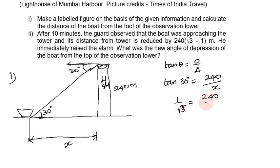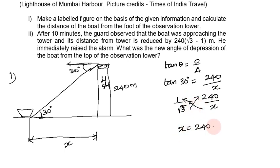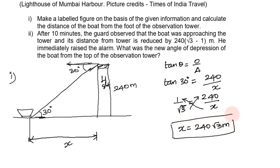Cross multiplying: x equals 240 into root 3, so the distance of the boat from the foot of the observation tower is 240√3 meters.